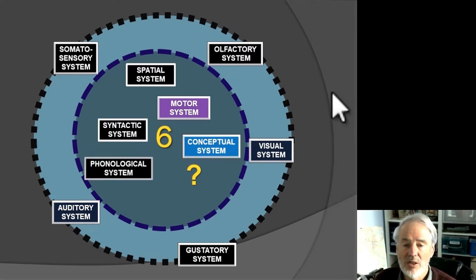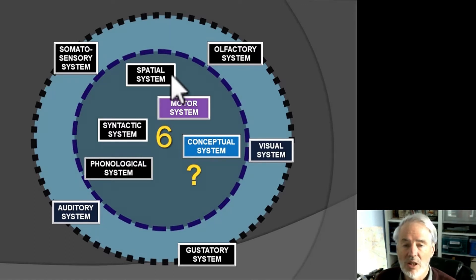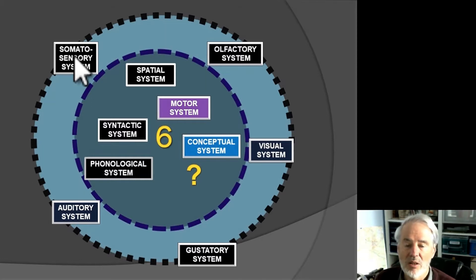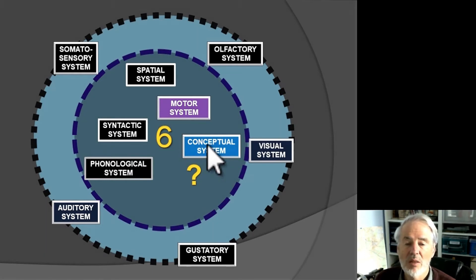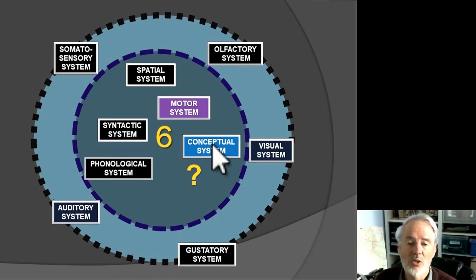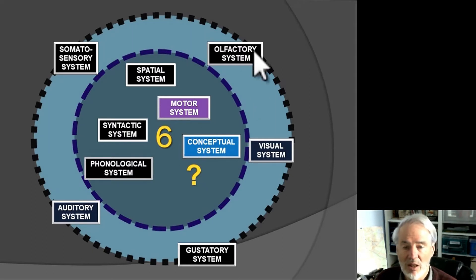Now looking at the deeper system — the system of systems — these are individual cognitive systems not in direct contact with the outside environment. They rely on the outer ring for any associations needed with the results of interactions between the mind and the outside world. We have six of them: the spatial system, the motor system, and the all-important conceptual system, which is particularly well developed in humans and is absolutely enormous.